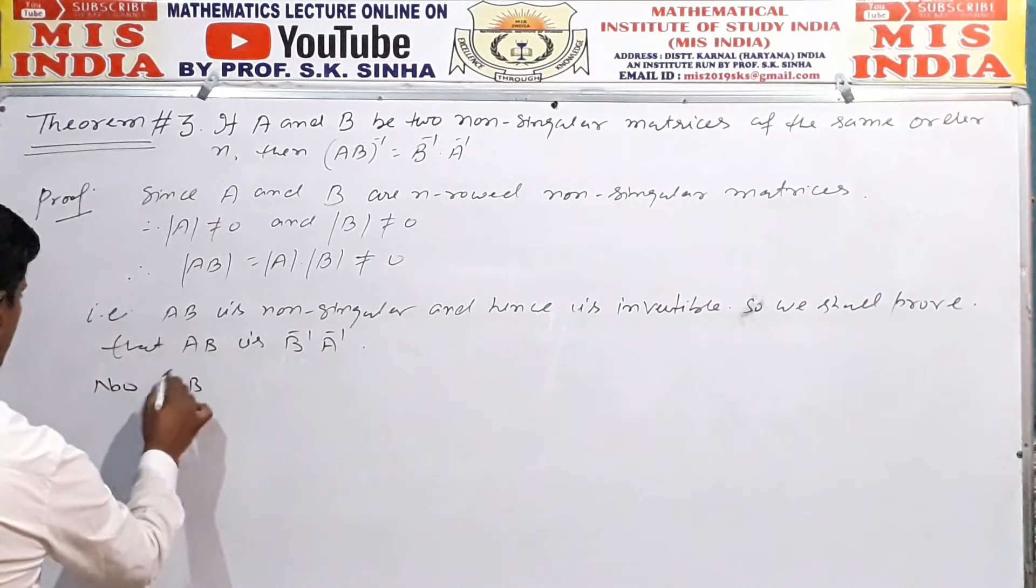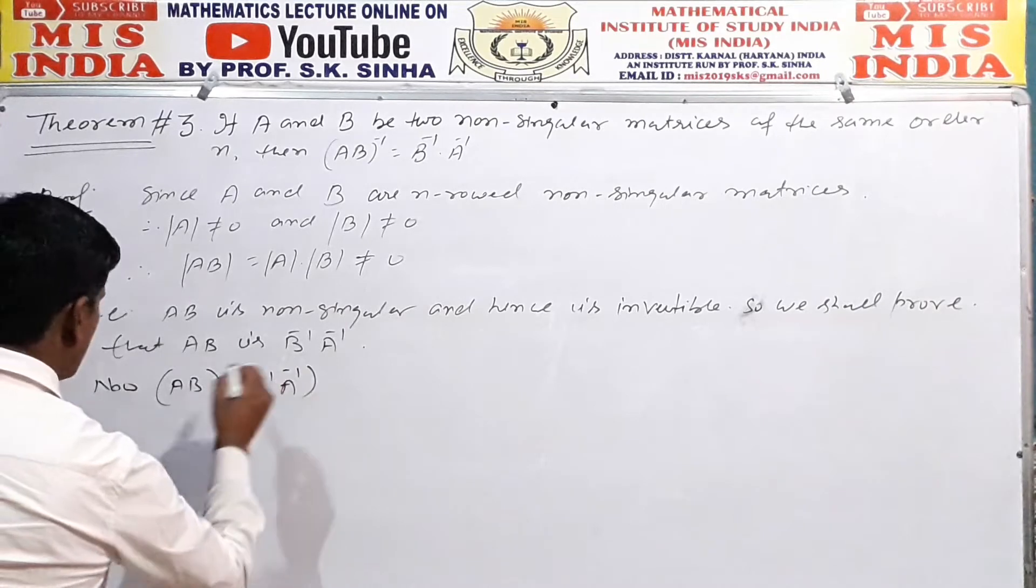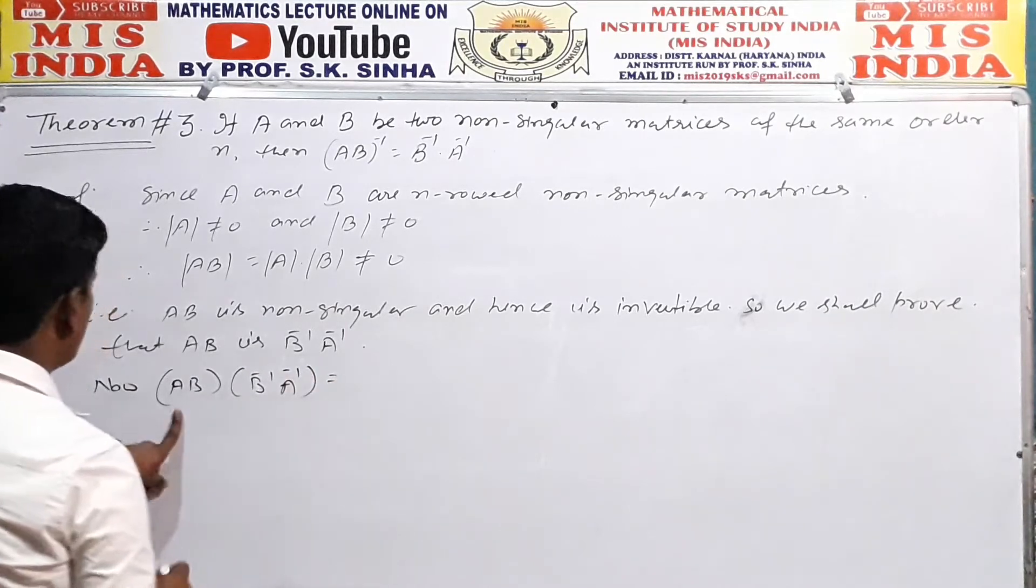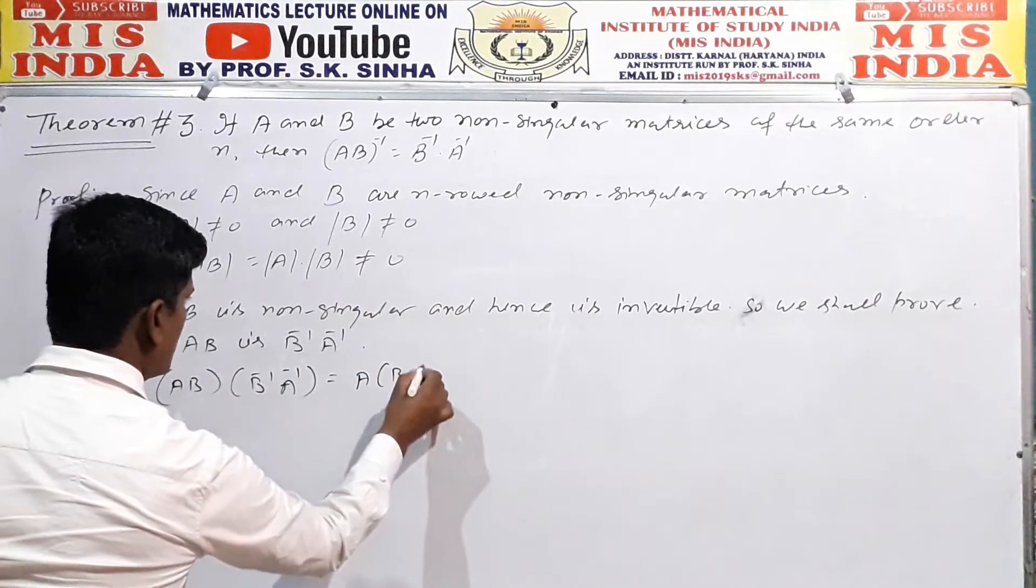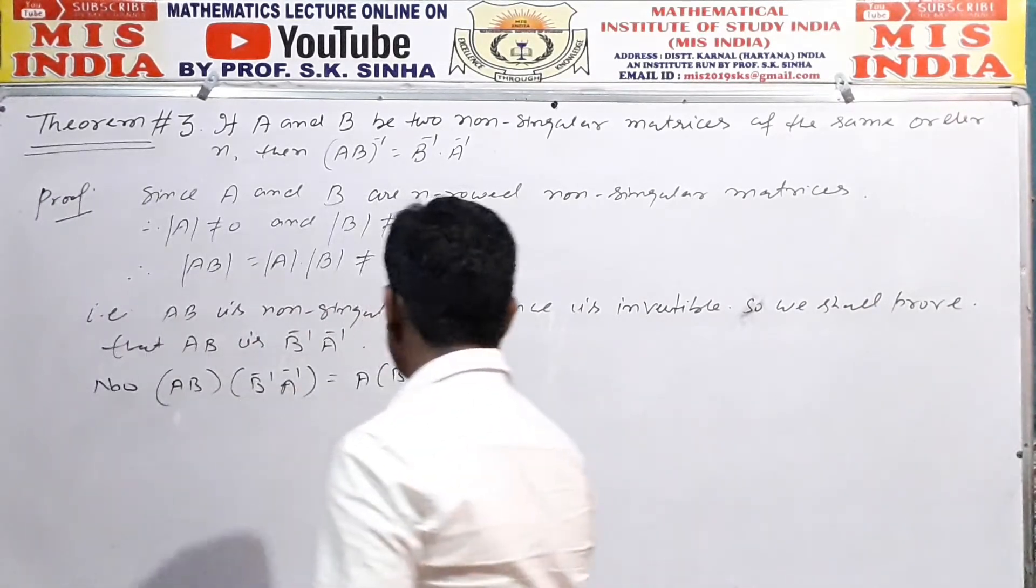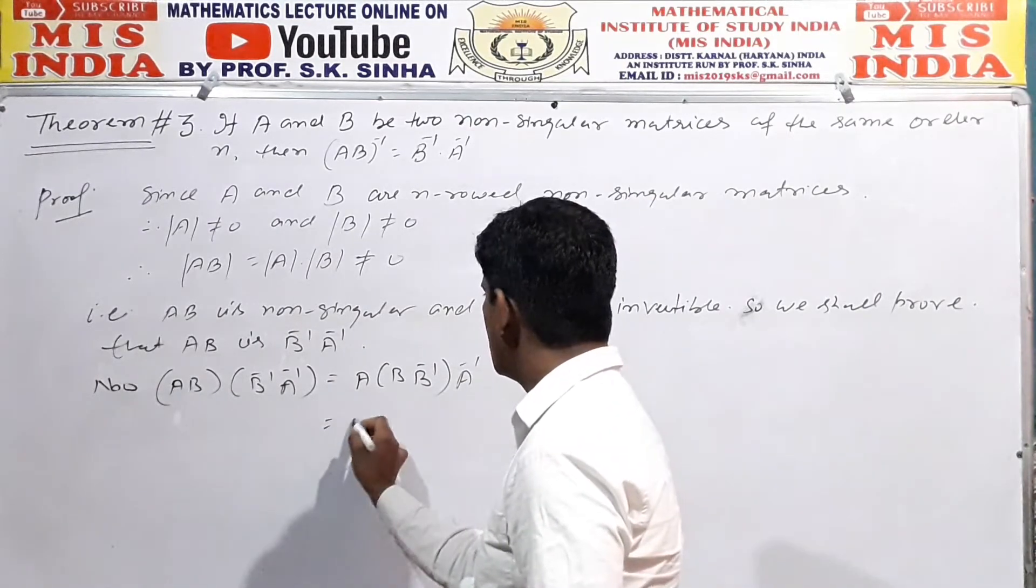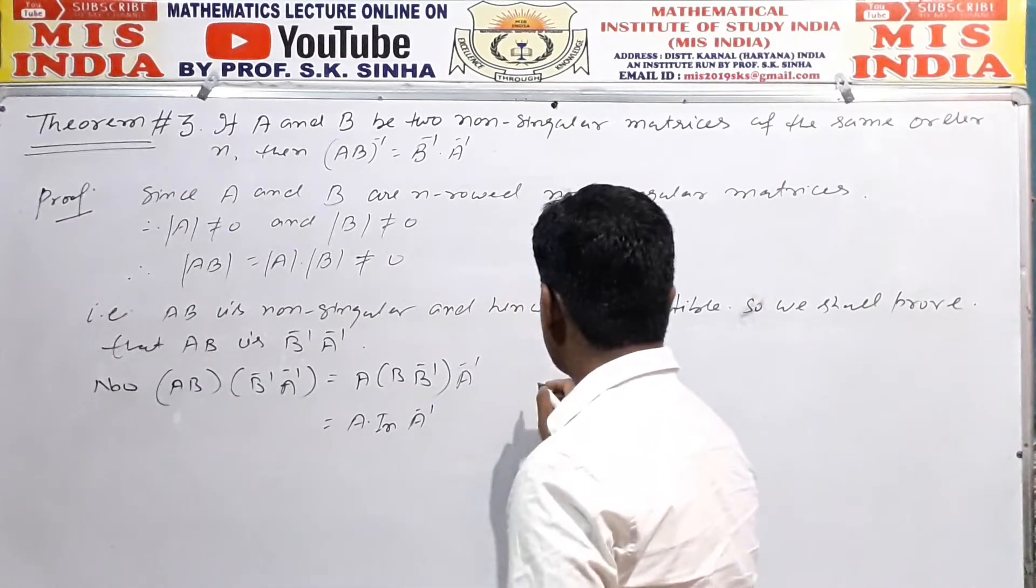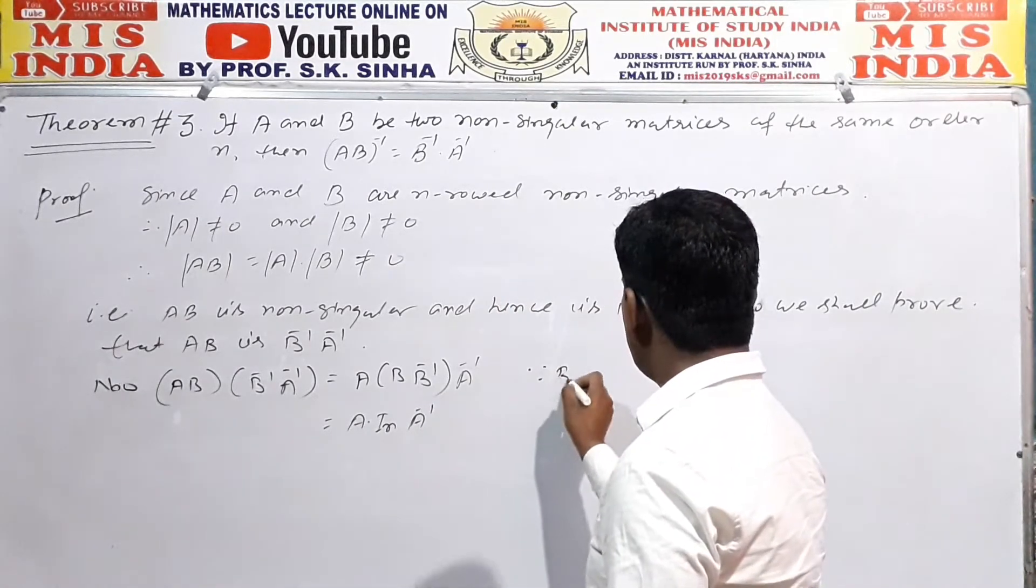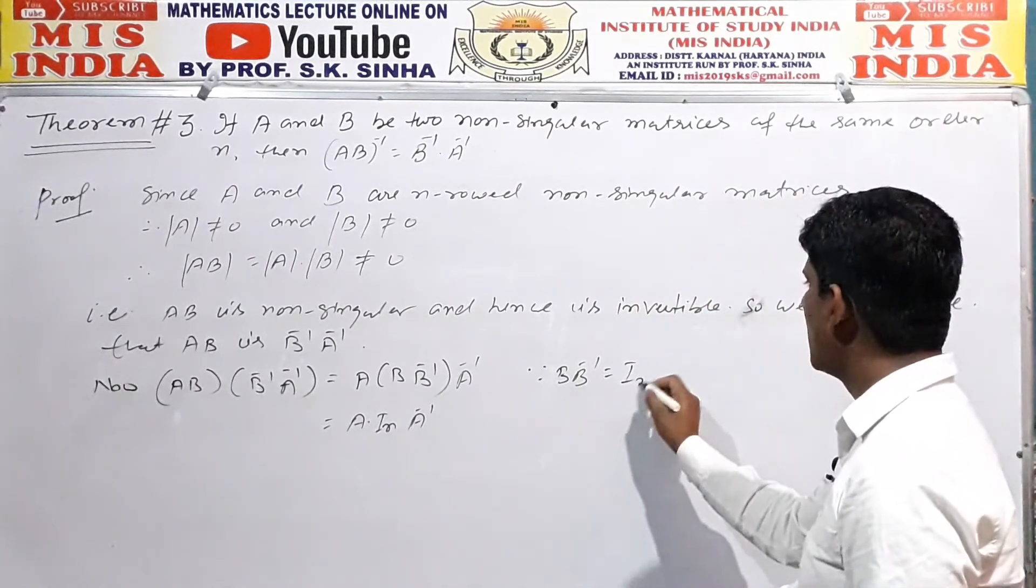Now, AB into B inverse into A inverse is equal to A into, B into B inverse, into A inverse. So this is equal to A into identity matrix I_n into A inverse, because B into B inverse is equal to identity I_n.